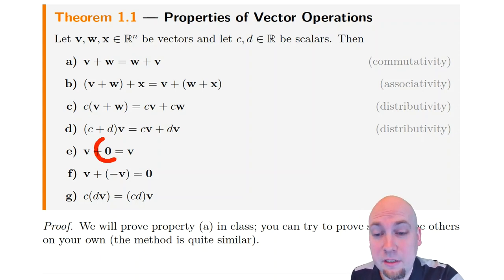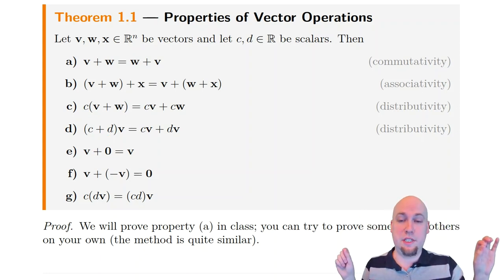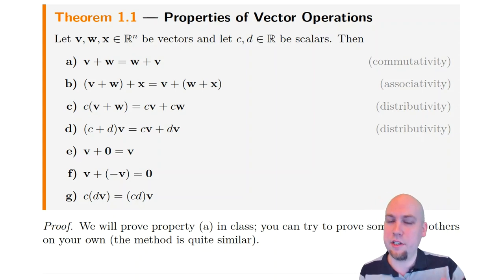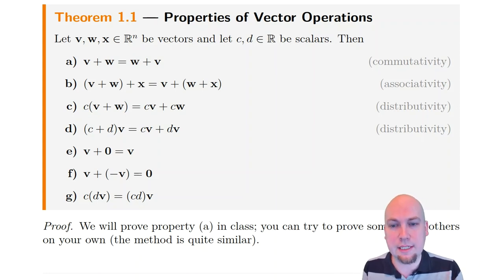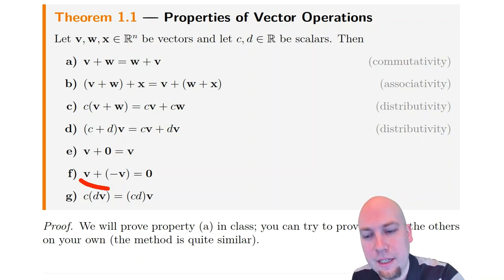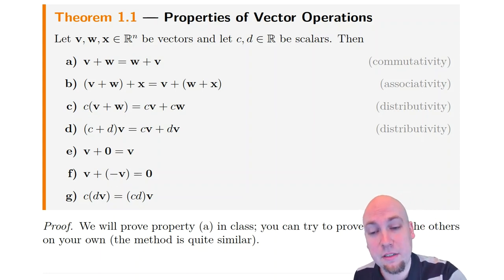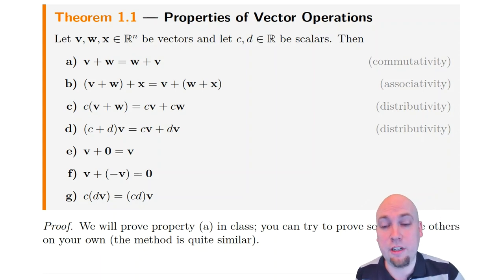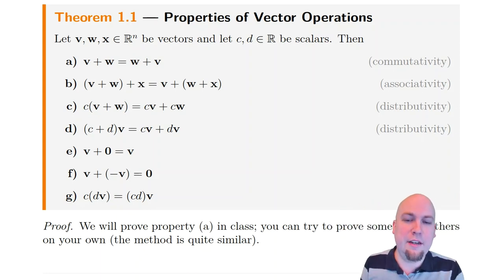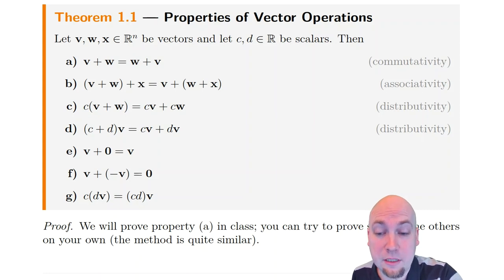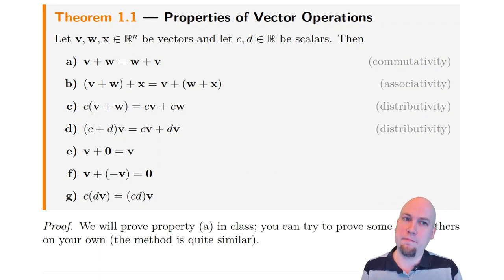The zero vector — the vector with every entry equal to zero — has the property that if you add it to another vector, you don't change that vector. If you take a vector and add its negative, you get the zero vector — the negative vector is just the one you get by sticking a minus sign in front of each entry. The last property is a kind of associativity for scalar multiplication: if you do scalar d times scalar b and then times scalar c, that's the same as multiplying the scalars together first and then times b. None of these should be surprising — they all follow from the definitions very quickly.